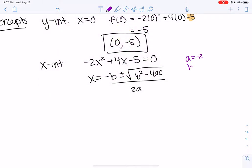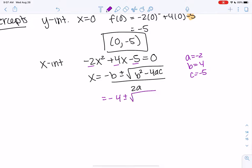And so let's plug in. a is negative 2, b is 4, and c is negative 5. So we get negative 4 plus or minus b squared, 4 squared, minus 4a, negative 2, c, negative 5, all over 2 times negative 2.